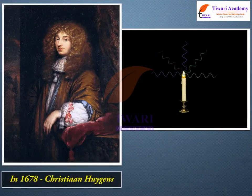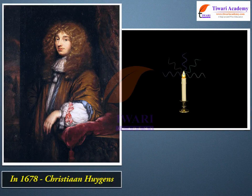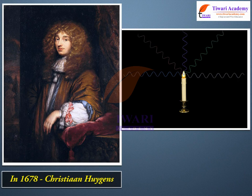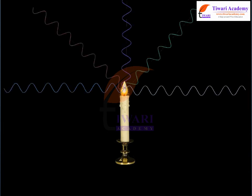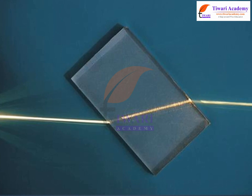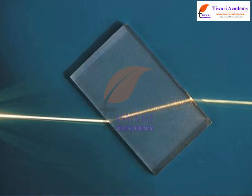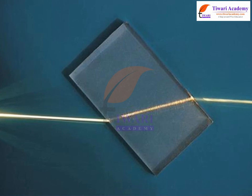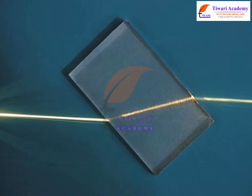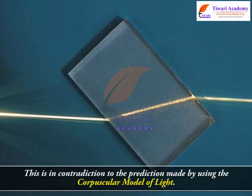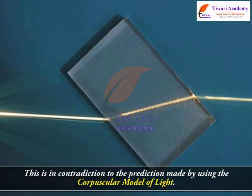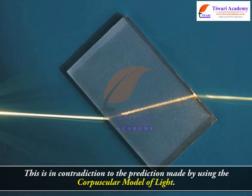But in 1678, the Dutch physicist Christiaan Huygens put forward the wave theory of light. We will discuss this wave model of light in this chapter. It predicted that on refraction, if the wave bends towards the normal, then the speed of light would be less in the second medium. This is in contradiction to the prediction made by using the corpuscular model of light.